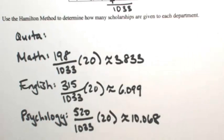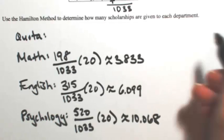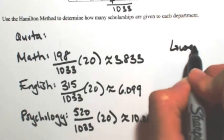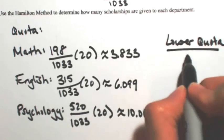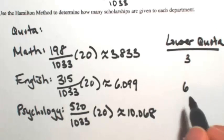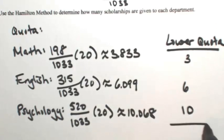In the Hamilton method, the first thing we do is assign each category the lower quota. So rounding down, math would get 3, English would get 6, and psychology would get 10. All together, 19 scholarships have been given out.